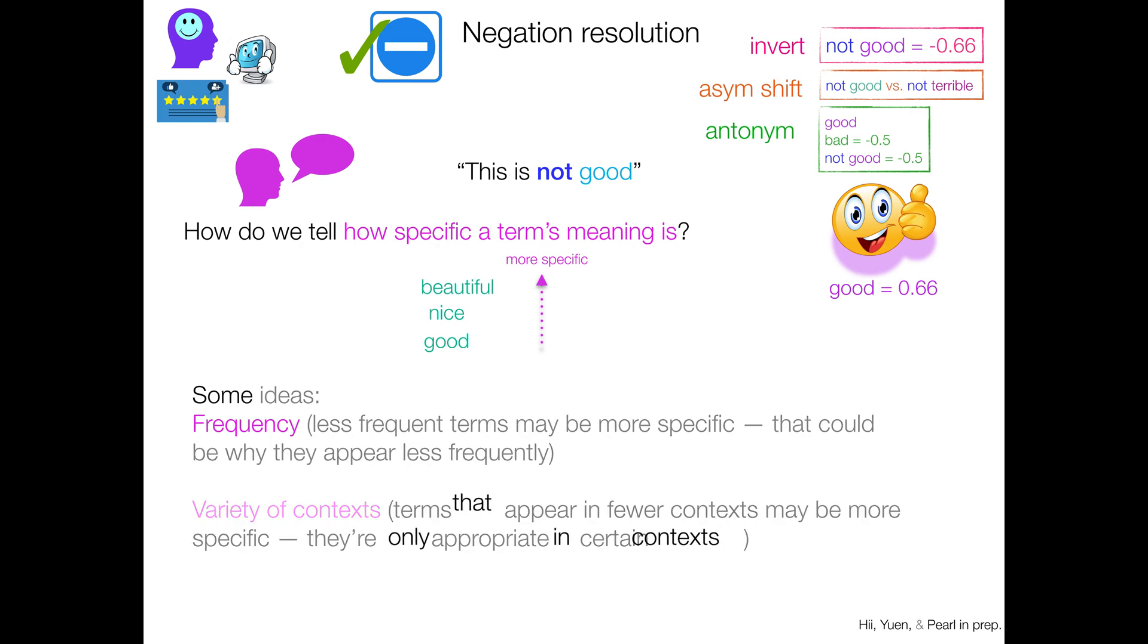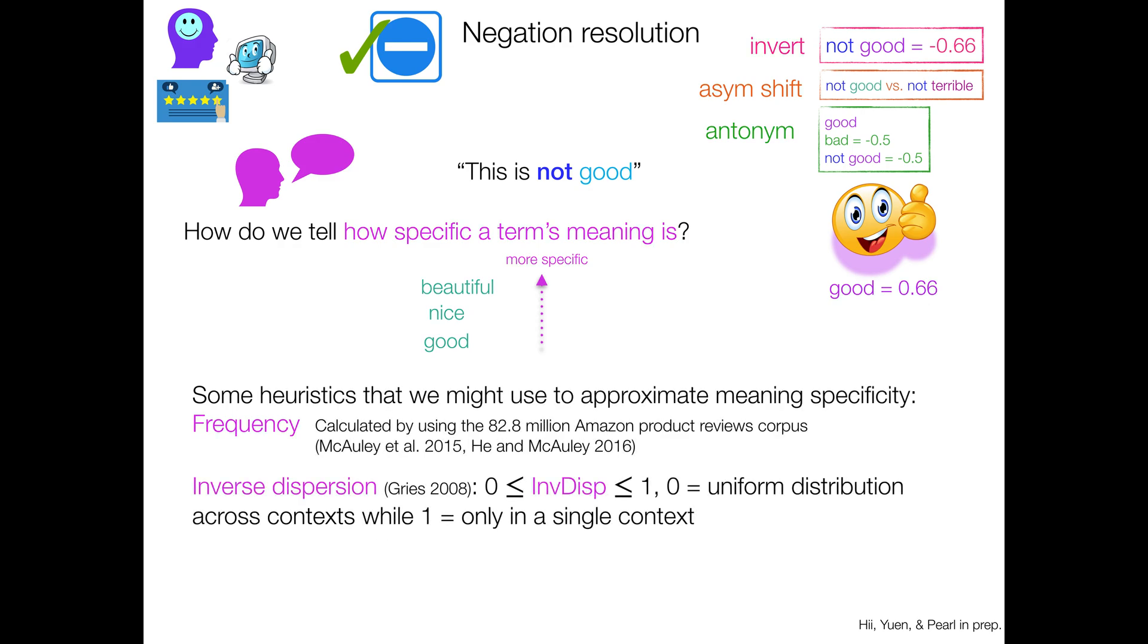So frequency and variety of contexts. And we can have some heuristics that we might use to approximate them. So frequency we can just maybe calculate from a large enough corpus. In fact, the Amazon product reviews corpus has like 82.8 million reviews in it, so we can kind of get relative frequency of a term.